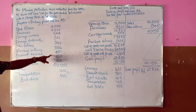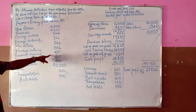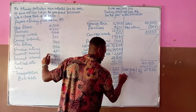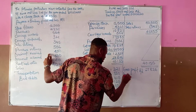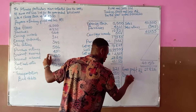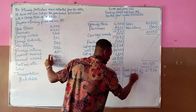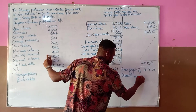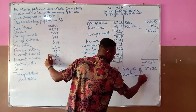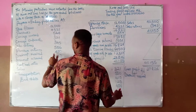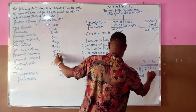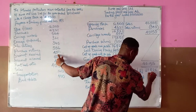Discount received is an income because it increases the value of what we have, so it is added to our gross profit on the credit side. Discount received is 450, and adding it to gross profit gives us a total credit of 28,276.